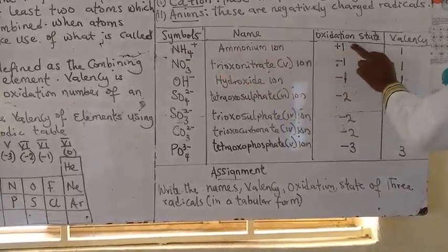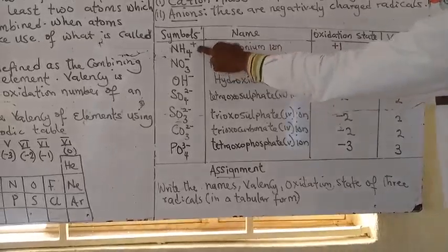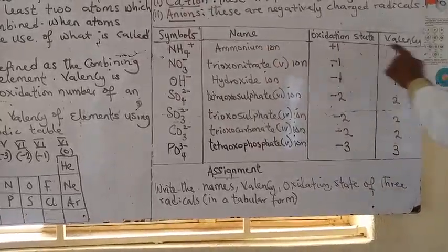NH4+. Now, the oxidation state is the charge you see here plus one. Most of the time, we omit one in chemistry. So the oxidation state is one. The valency is one.